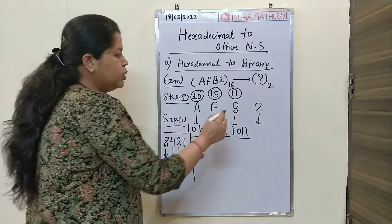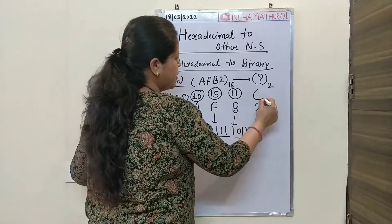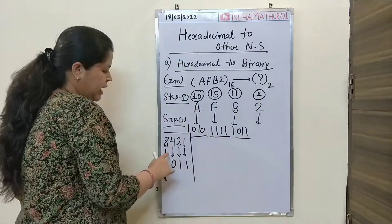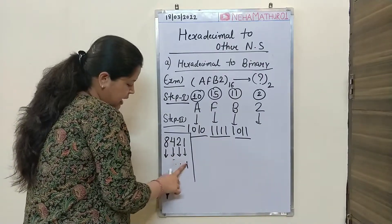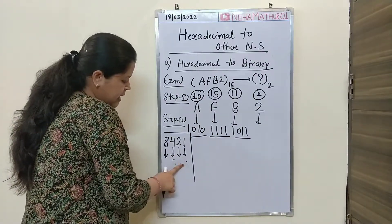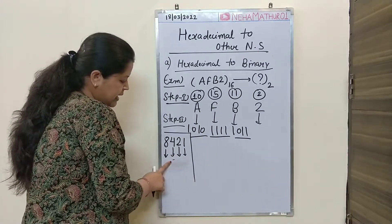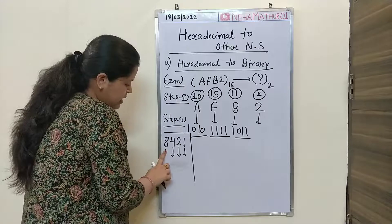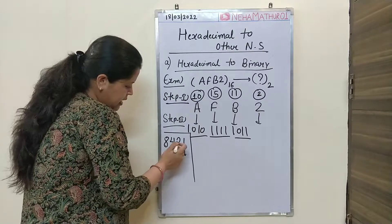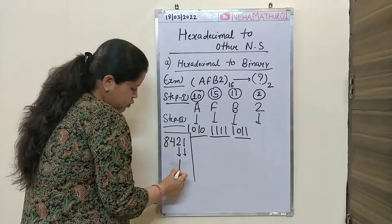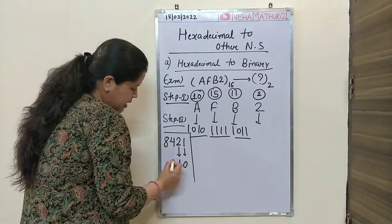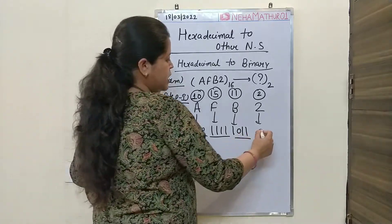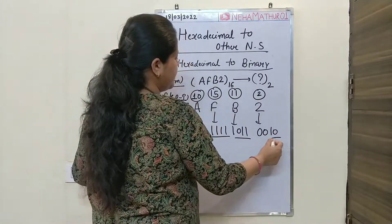Similarly for 2, we can directly see that 2 is directly present in the 8421 values. So we just take 2 directly, meaning that position is 1 and the remaining digits are 0. The 4-bit binary equivalent for 2 is 0010.